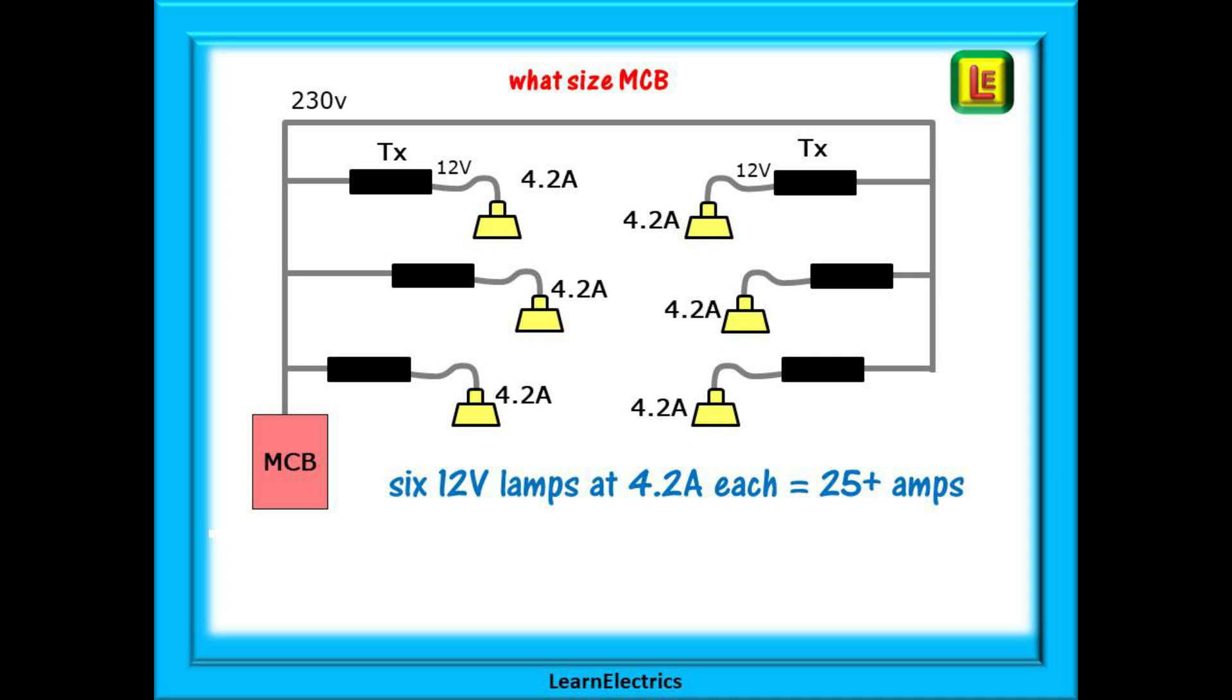If the total load to the luminaires is just over 25 amps, what should the rating be of the MCB on the 230-volt side?